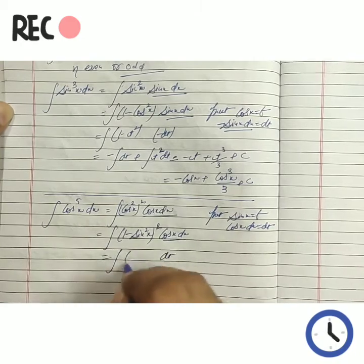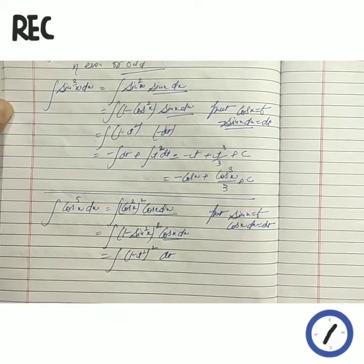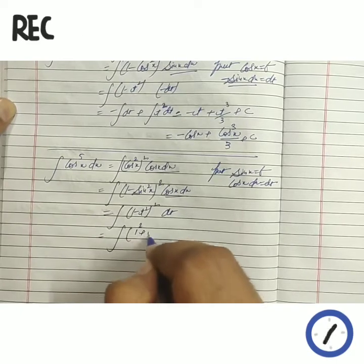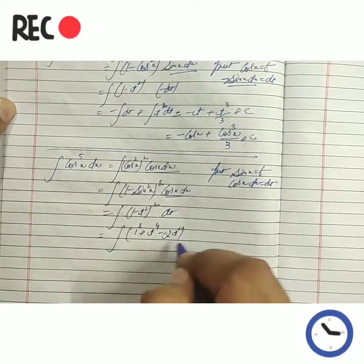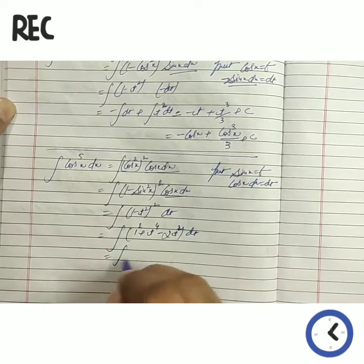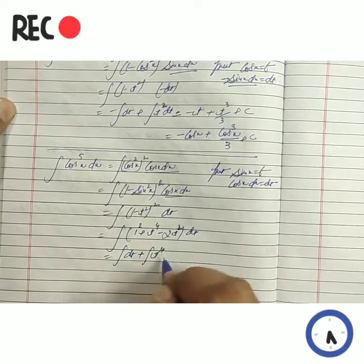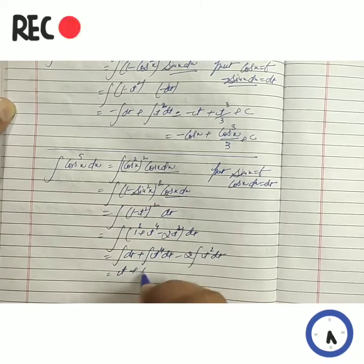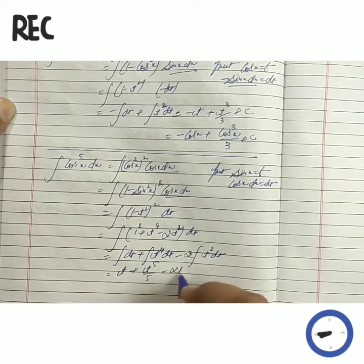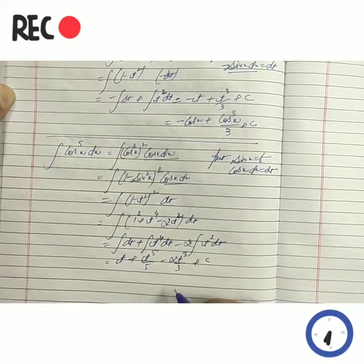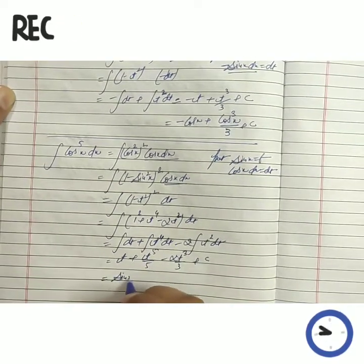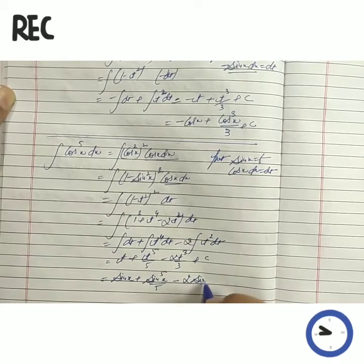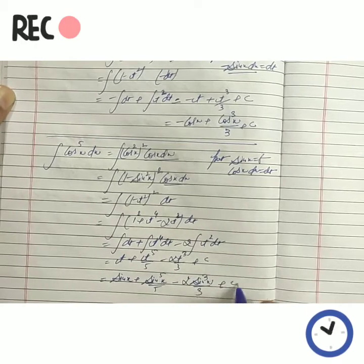So this value will become dt here. It becomes (1 − t²)², which is like the identity (a − b)². Expanding it, we get a² + b² − 2ab. Separating them: dt, t⁴ dt, minus 2t² dt. Integrating we get t, t⁵/5, minus 2t³/3 + C. Replacing the value of t, which is sin x, it becomes sin⁵x/5 minus 2sin³x/3 + C.